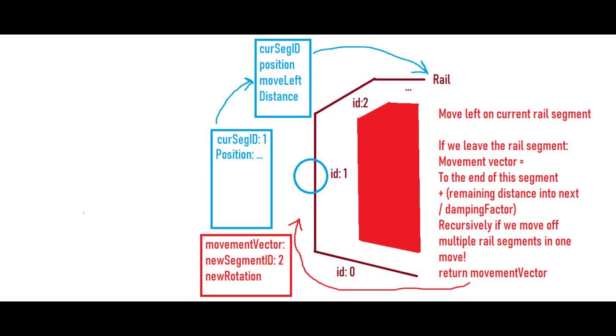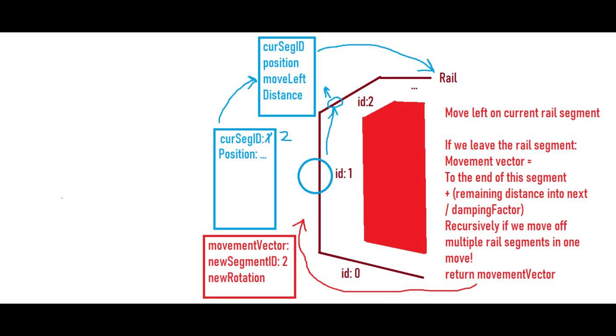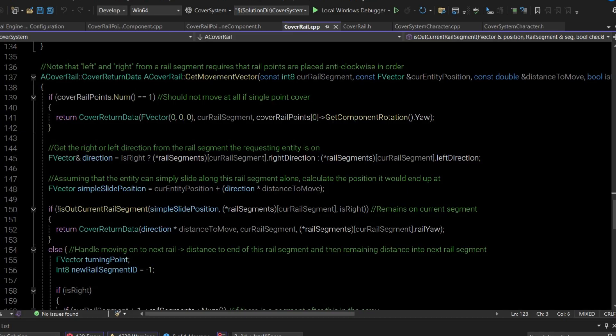This sliding onto the next segment also had to be applied recursively, because the player could move onto the next segment and instantly slide off that onto the next. There are checks depending on whether the rail is looping — if there's no next segment the player stops at the end, and if it is looping we figure out where the next segment is. The cover rail system's get movement vector function takes in the player's current rail segment ID, position, distance to move, and whether it's moving left or right. It first checks for a one-point system, returning zero movement since you can't move on a one-point cover.